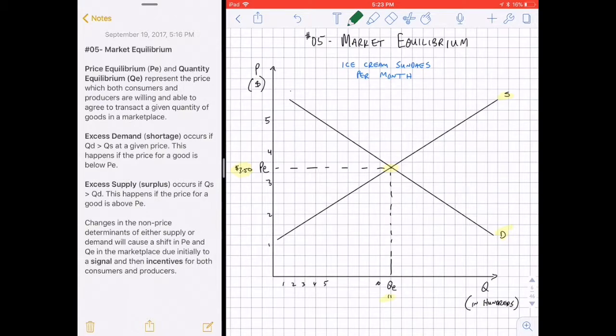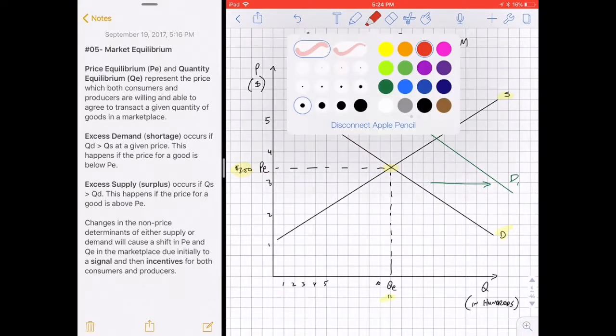If you think about the non-price determinants of demand, one thing that could increase or decrease demand for ice cream sundaes is whether or not tasting preferences for that particular good change because of something going on in the marketplace. Let's presume that we're in the middle of a heat wave. It's very hot outside. The demand for ice cream sundaes would probably go up as when it's warm out, people demand more of this satisfying and cool treat. If the curve shifts to the right because of an increase in demand, at the original market equilibrium price, 1,100 ice cream sundaes were being produced at $3.50.